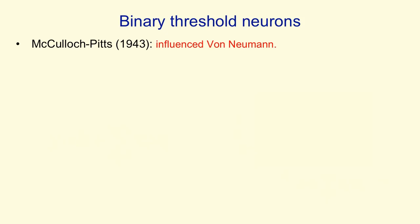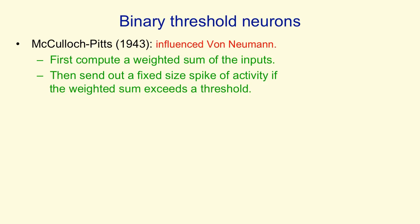Very different from linear neurons are binary threshold neurons that were introduced by McCulloch and Pitts. They actually influenced von Neumann when he was thinking about how to design a universal computer. In a binary threshold neuron, you first compute a weighted sum of the inputs, and then you send out a spike of activity if that weighted sum exceeds the threshold.